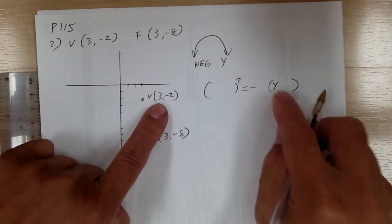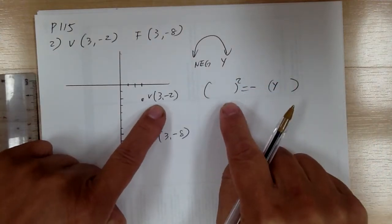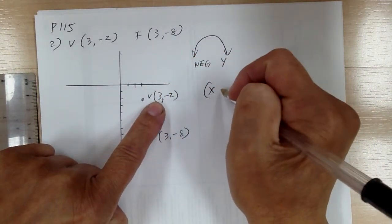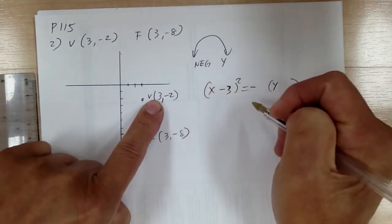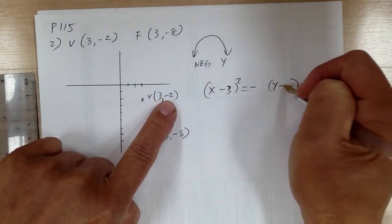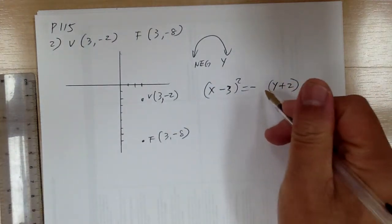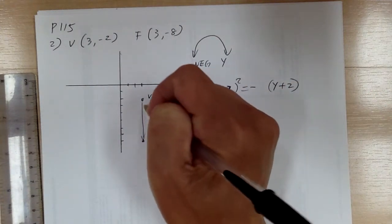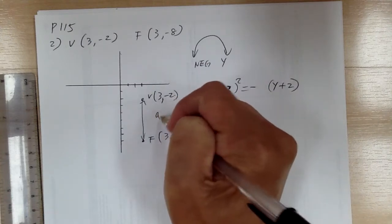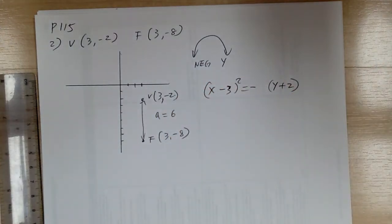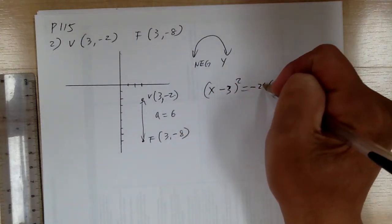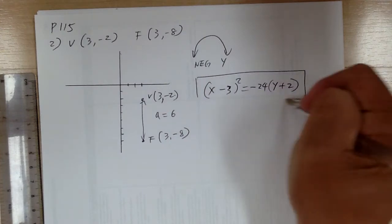First determine your direction, then put the vertex in there. So it would be (3, -2), so it would be minus 3 for x, and minus negative 2 will give you plus 2 for y. Next, you have to figure out the 4a. You can find the difference between them, so a equals 6, and so 4a equals 24. Put 24 right over here, and that's it for number 2.